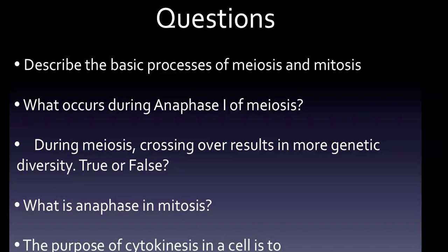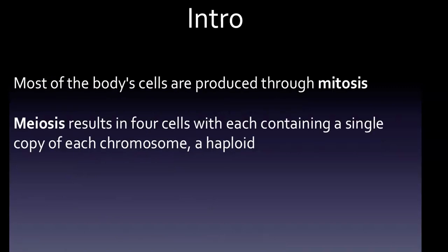Key topics include: Anaphase one of meiosis, a question about whether crossing over results in more genetic diversity, Anaphase in mitosis, and the purpose of cytokinesis in a cell. Let's hop right in.